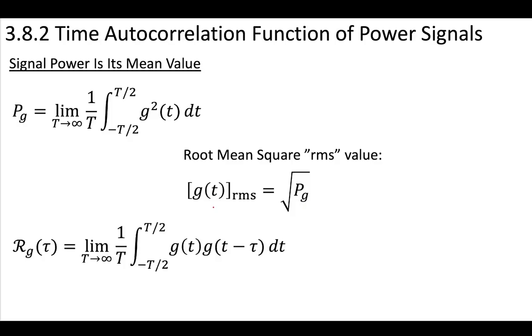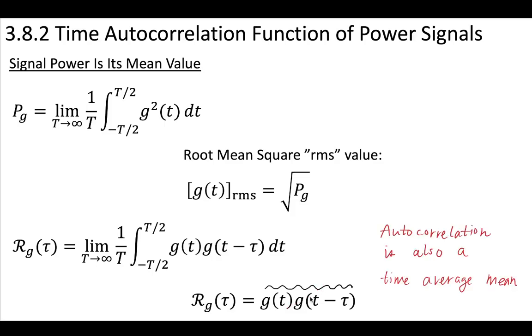And relating this to the time autocorrelation function, we can say that the time autocorrelation function is equal to the time average mean of the autocorrelation. So autocorrelation is also a version of a time averaged mean.